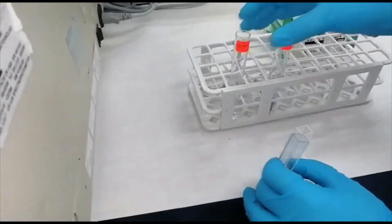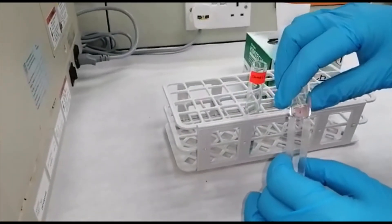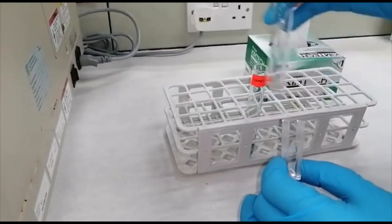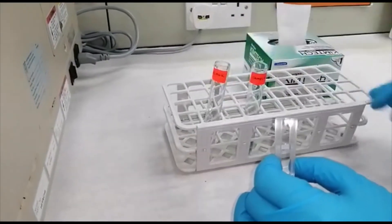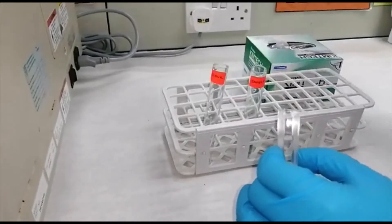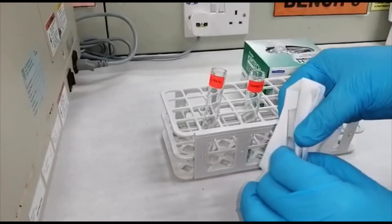Tuang larutan pengosong ke dalam kuvet. Pastikan isi padu melebihi 1 per 3 isi padu kuvet. Lapkan permukaan optik.